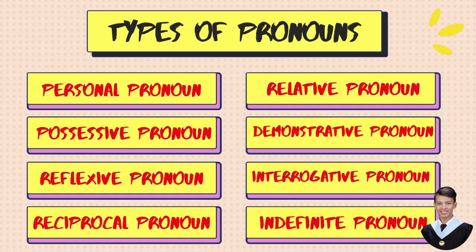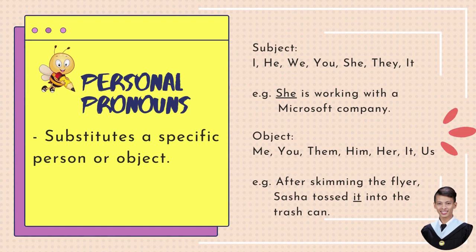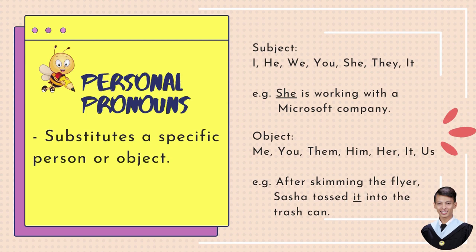Let's tackle these types of pronouns one by one. And let's begin with the personal pronouns. Personal pronouns substitute a specific person or object. So, we have subjective personal pronouns and objective personal pronouns. For subjective personal pronouns, these are: I, he, we, you, she, they, and it.